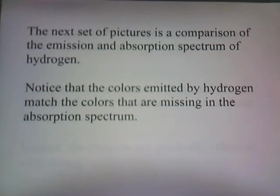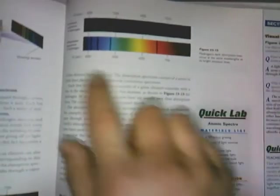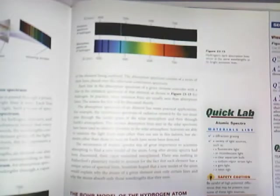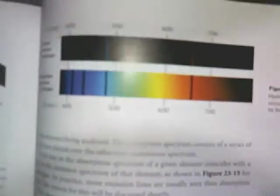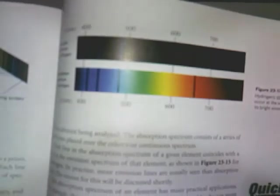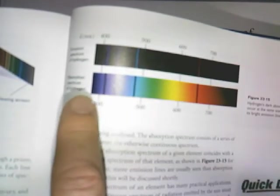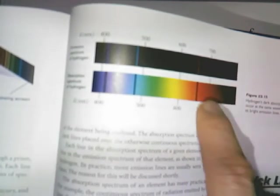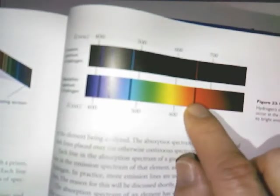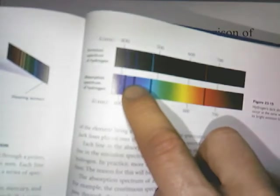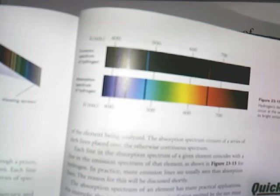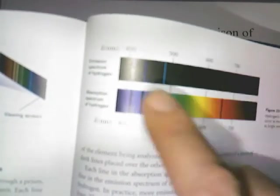The next set of pictures shows a comparison of the emission and absorption spectrum of hydrogen. Notice that the colors emitted by hydrogen match the colors that are missing in the absorption spectrum. Here is the emission spectrum of hydrogen — you can see these little colored lines. This is the absorption spectrum of hydrogen: a continuous spectrum with certain bands of color missing. Notice that the bands of color that are missing match the colors that are emitted. So the absorption spectrum is just the mirror opposite of the emission spectrum — it shows the colors absorbed, and the emission spectrum shows the colors emitted. They're the same.